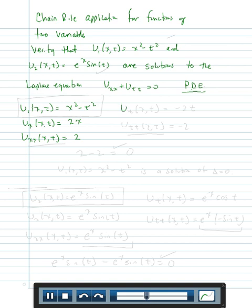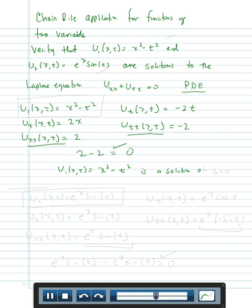When we calculate u sub t,t, the first partial with respect to t means we hold x as a constant, and that's equal to negative 2t. The second partial with respect to t is the derivative of negative 2t with respect to t, which is equal to negative 2. So if I form the sum of u sub x,x and u sub t,t, I get 2 minus 2, which clearly equals 0. Therefore, u sub 1 of x, t equals x squared minus t squared is a solution of Laplace's equation.